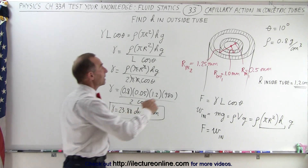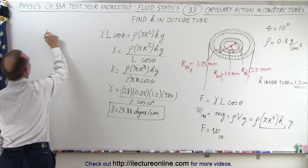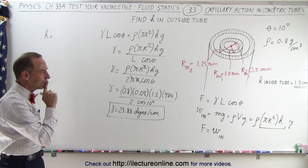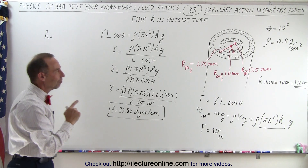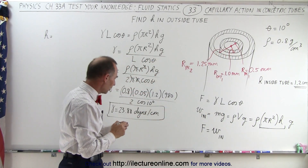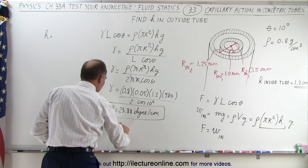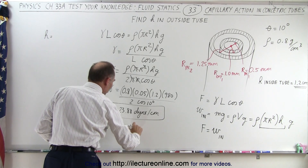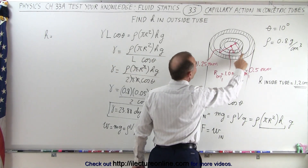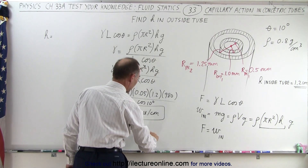Now that we have the surface tension constant for the liquid, we need to find the height in the annular region between the two tubes. We'll use the same approach but solve for h. We must be careful because the volume inside the annular region is different — the weight of the liquid is rho times v times g, where the volume is the outer volume minus the inner volume.